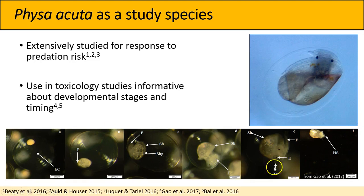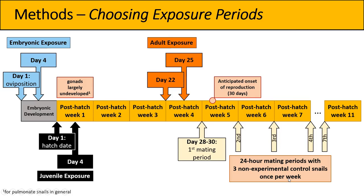One important thing to note is that the predator cues used in this experiment were chemical predator cues. The way we produce these is by feeding a set mass of snails to a number of crayfish, sampling water from those bowls, and combining it with water that has crushed snails in it. That combination of injured conspecific cue and predators eating conspecifics has been shown time and again to elicit a very strong anti-predator response in this species.